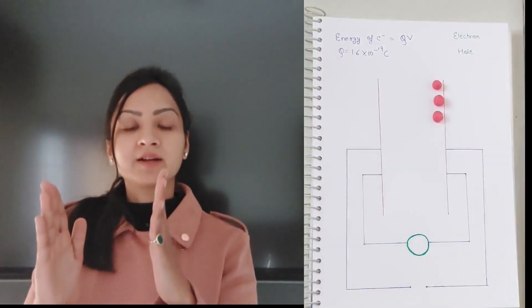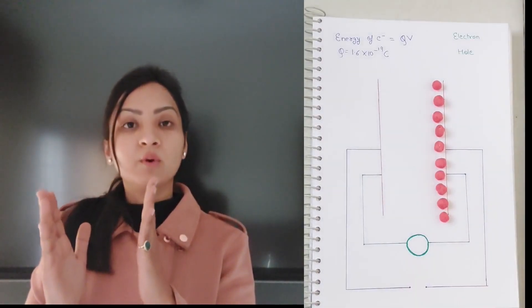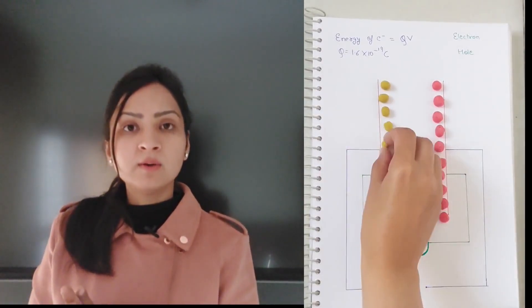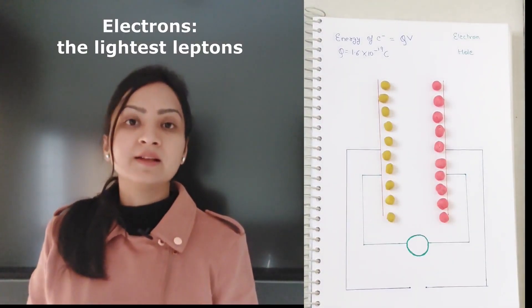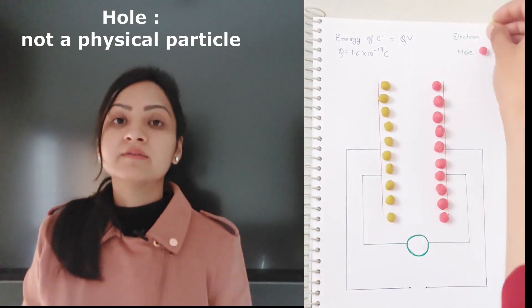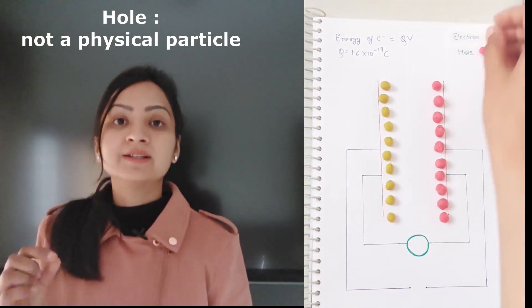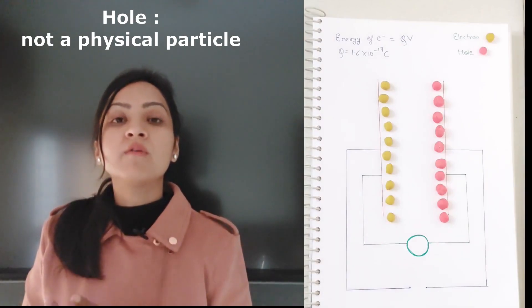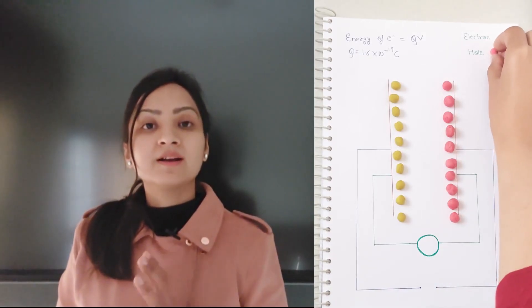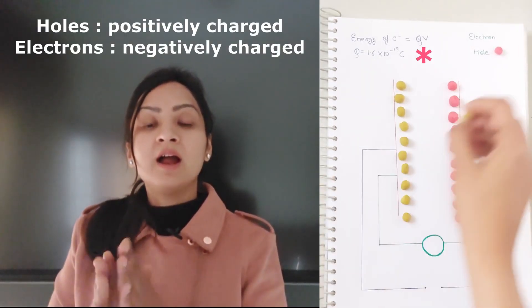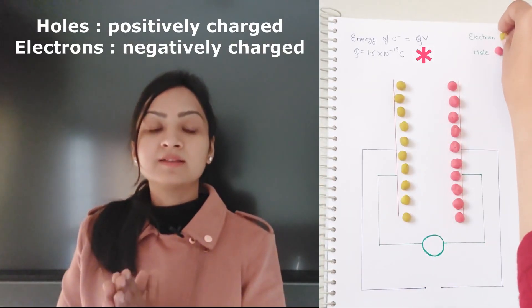We are talking about stray capacitance. Let us first talk about what a capacitor is. So you have two parallel conducting plates. On one plate you have holes and on the other you have electrons. Electrons are negatively charged subatomic particles — the lightest lepton. Holes are not a physical entity like an electron; it's just the absence of an electron at a particular position in an atom.